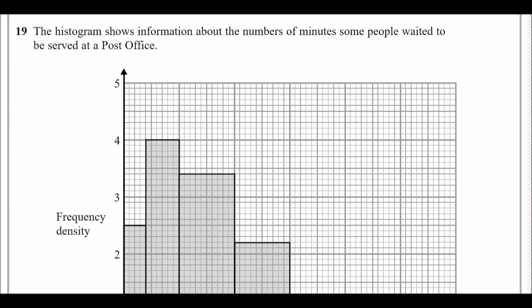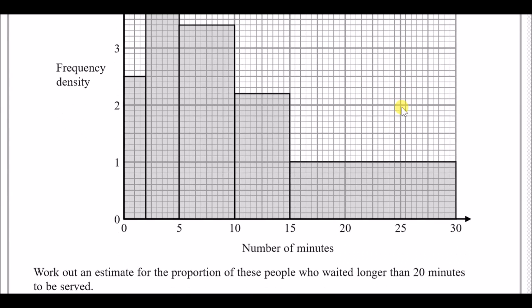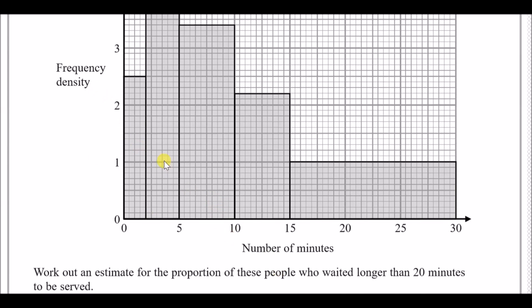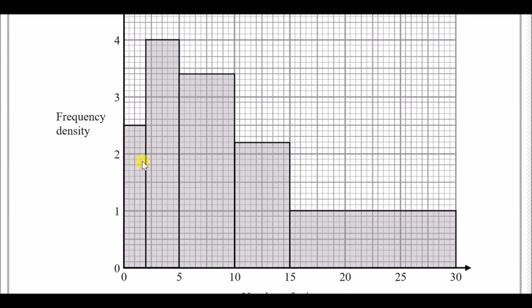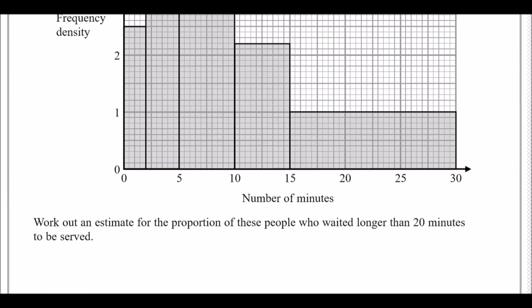Number 19: the histogram shows information about the numbers of minutes some people waited to be served at a post office. We have the class widths represented by number of minutes, and frequency density as the height. If you multiply these two values you get the total frequency — the number of people.